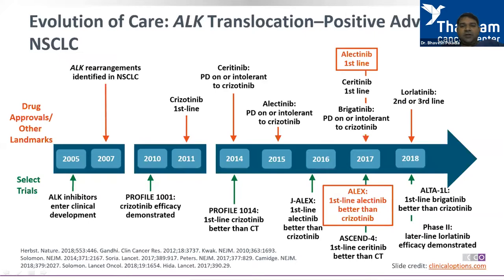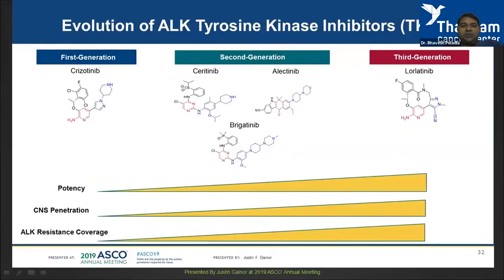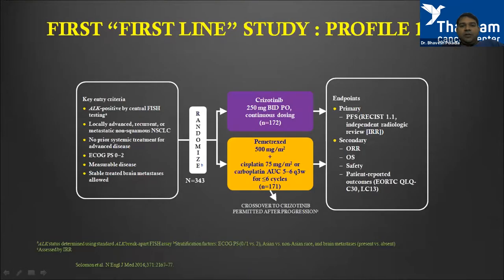We have seen a big evolution from 2007 till now, with first, second, and third generation ALK inhibitors showing progressively better effects. Going from first to second to third generation, the potency, CNS penetration, and ALK-resistant mutation coverage have all improved. We'll go through them one by one.